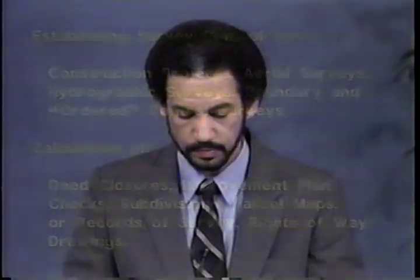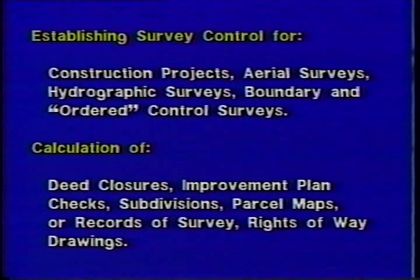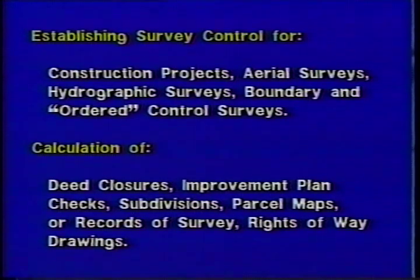Traversing is, and will remain, a convenient, efficient method of establishing control points for a variety of surveying activity. Examples of this are establishing survey control for construction projects, aerial surveys, hydrographic surveys, and boundary or ordered control surveys.